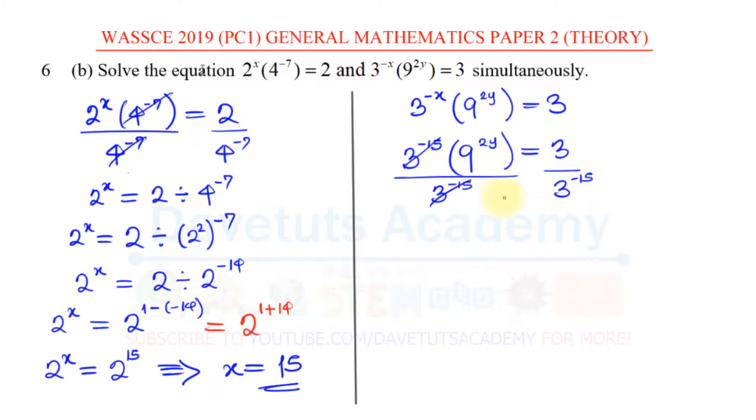So this will cancel. 9 I also know to be 3^2, and then the 2y that I'm having there. Having done that, I know this is 3 ÷ 3^(-15), and this is 3^1 just like we found the other time. I can open this bracket to say this will now be 3^(2×2y). That is 4y is equal to 3^(1-(-15)).